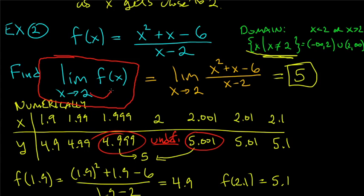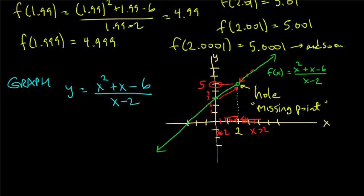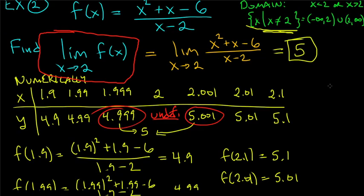This is a good example illustrating that when calculating a limit, you do not just plug in the number. In this example, plugging in 2 gives undefined, and yet the function does have a limit. There's a hole at the point (2, 5) — no y value when x = 2, but nearby y values are close to 5. That's the whole idea of a limit.